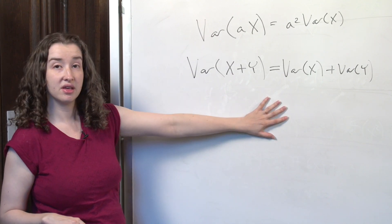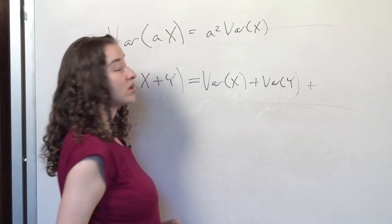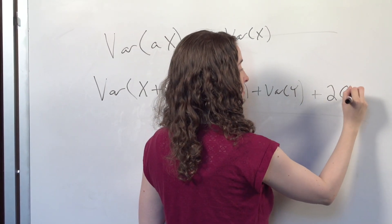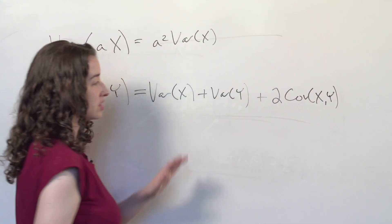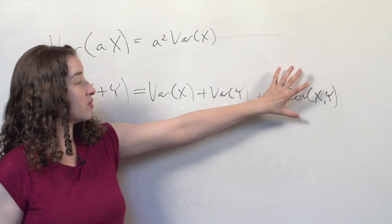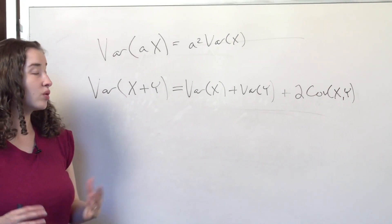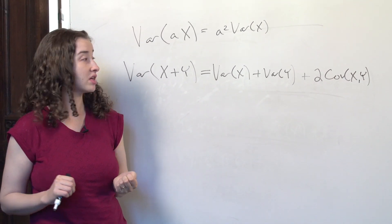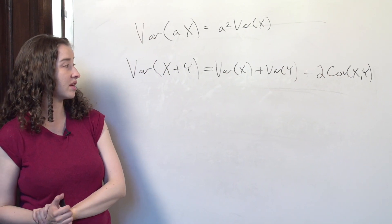The answer is that I'm missing something: the correlation between x and y. What I'm missing is 2 times the covariance. Covariance is a function of correlation — it's correlation, but not forced to be between negative 1 and 1 like correlation. So this term reflects the correlation between the two variables we're thinking of.